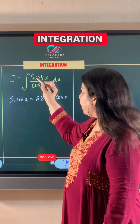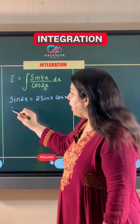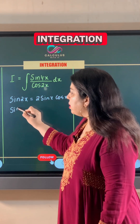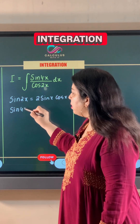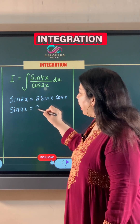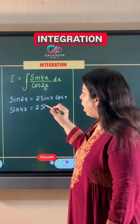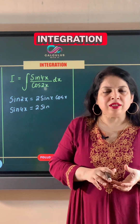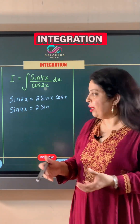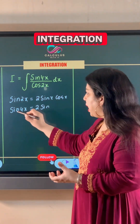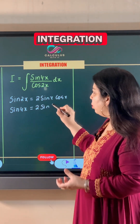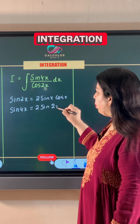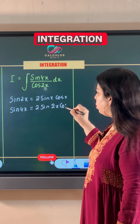That means if we are going to apply this identity on sin 4x, we will get half of 4x as the angles on the right hand side, so we get sin 4x is equal to 2 sin 2x cos 2x.